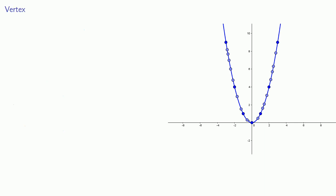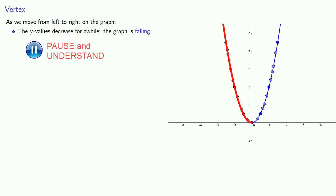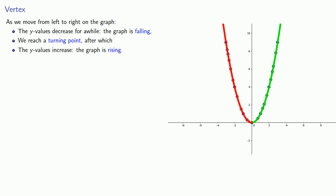Now there's some more details we could add to this. Notice that as we move from left to right on the graph, our y values decrease for a while. We say the graph is falling. But eventually we get to a lowest point on the graph, which we might refer to as a turning point, after which the y values start to increase again. We say that the graph is rising. This turning point has a special name. The turning point of the parabola is called the vertex. For the graph of y equals x squared, the vertex is at (0, 0).